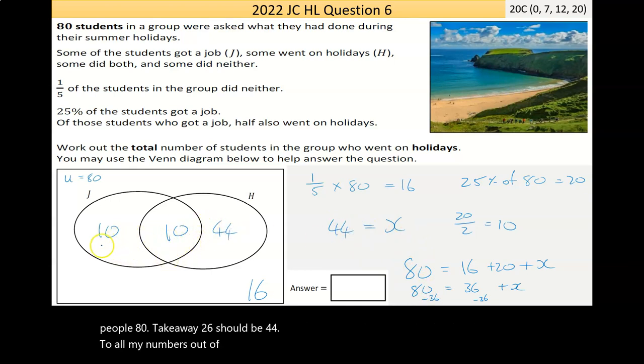Do all my numbers add up to give 80? 10 and 10 is 20, 20 and 44 is 64, 64 and 16 is 80. And that's it.